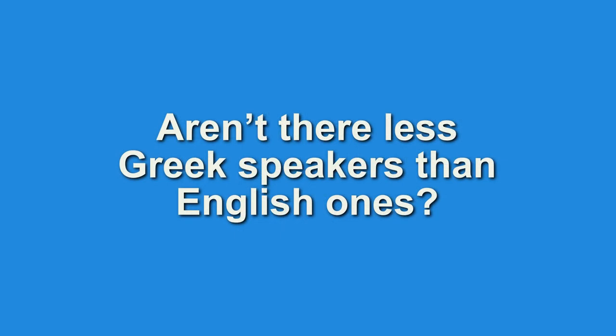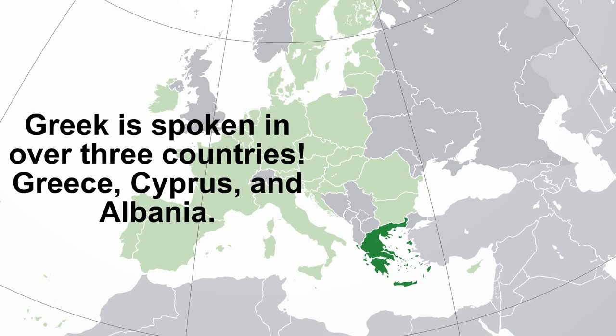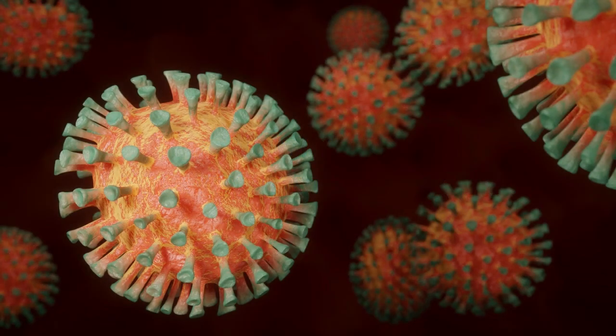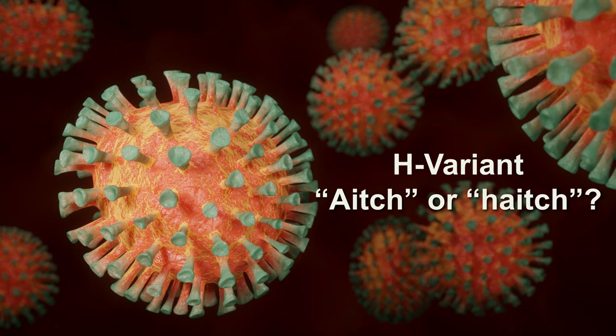Aren't there fewer Greek speakers than English ones? Actually, Greek is spoken in over three countries — Greece, Cyprus, and Albania. We started with the Alpha variant, Beta variant, Gamma variant, and then our personal favourite, the Delta variant. That didn't really answer my question. We know. But let's be honest, using English variant names would just sound ridiculous, right? The H variant — that just sounds ridiculous. And how would you even pronounce it? Is it H or H? We just don't know, so we went with the Greek alphabet instead.